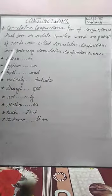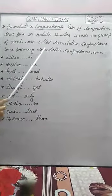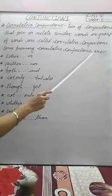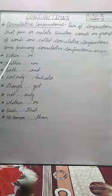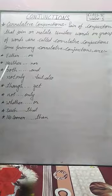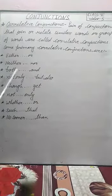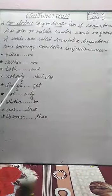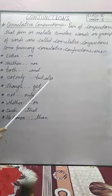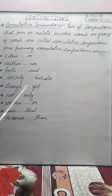Some primary correlative conjunctions are either or, neither nor, both and, not only but also, though, yet.